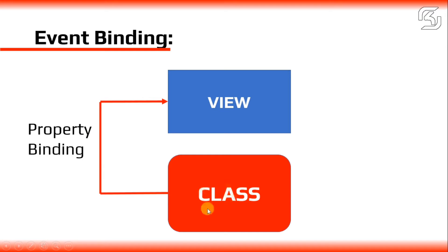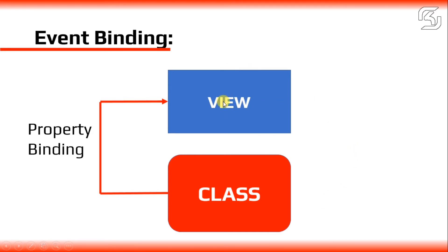If we don't update the property and value, then we will discuss the view. This is one-way direction. Sometimes it is the opposite direction — the view is the user's portion, so we will discuss the graphical activity and value.